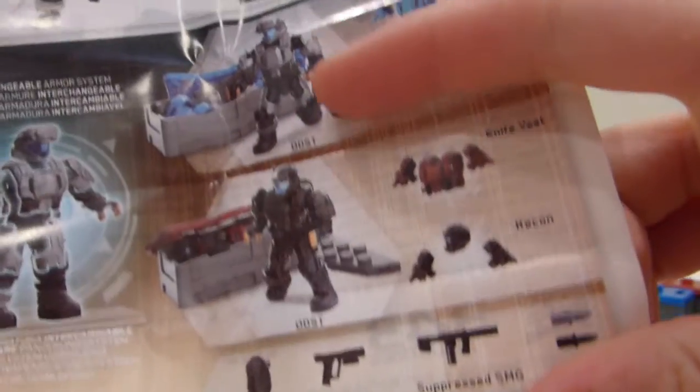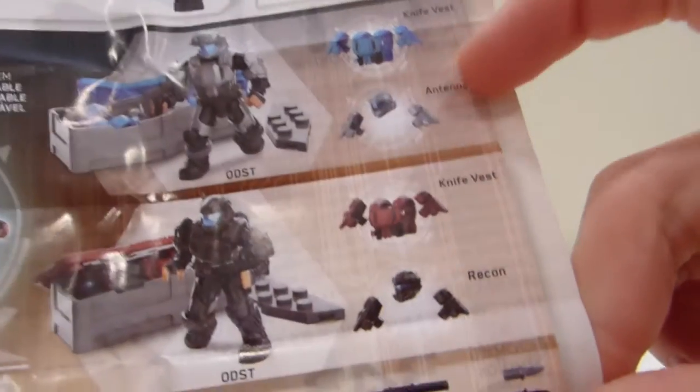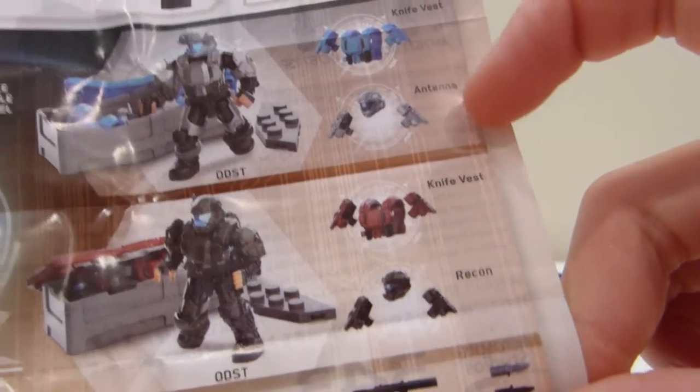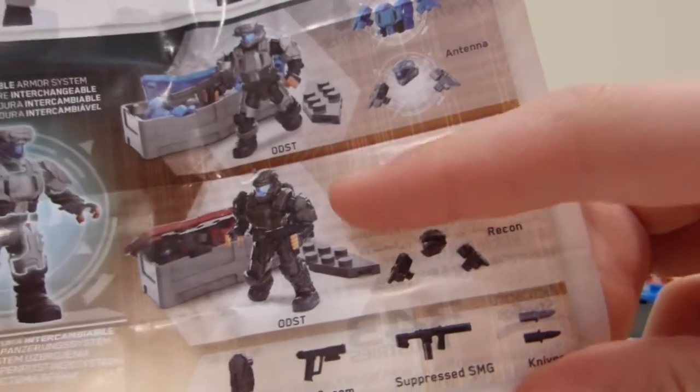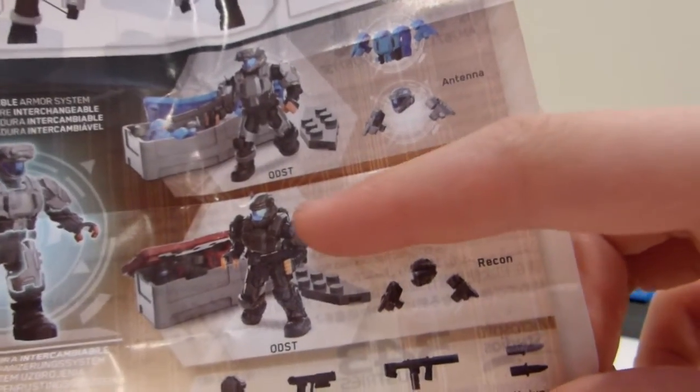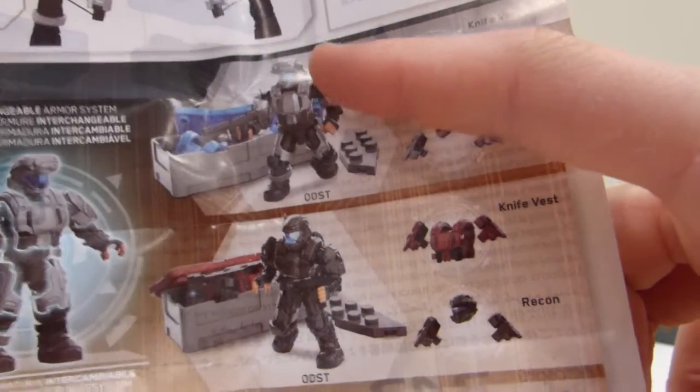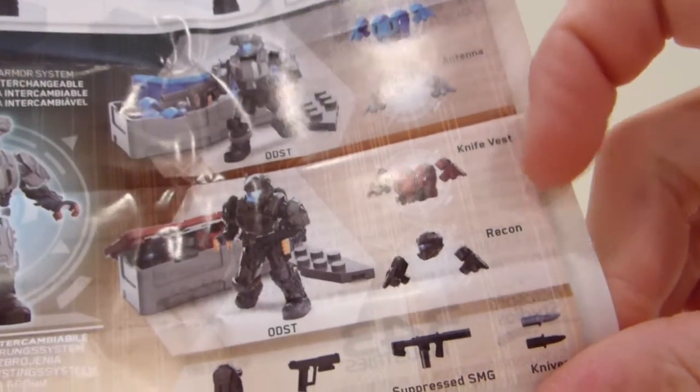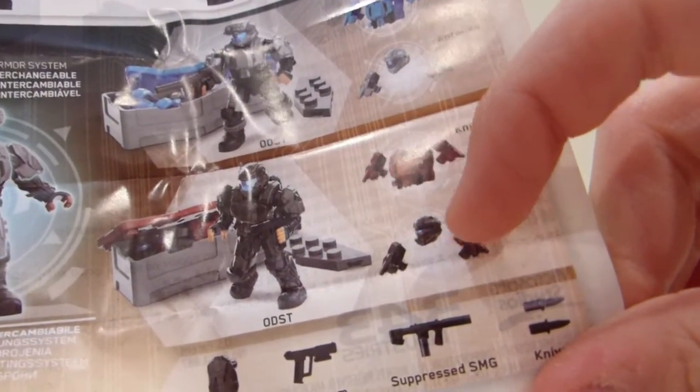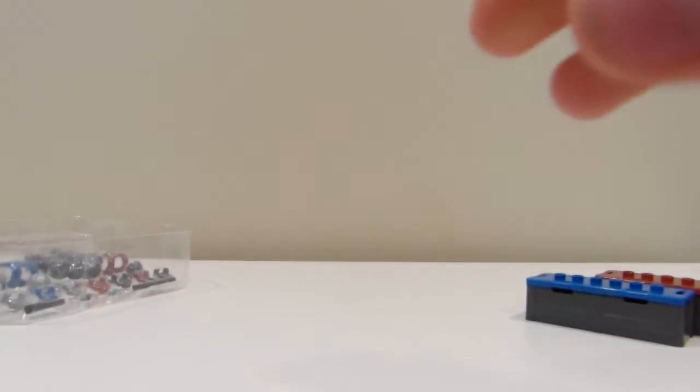It's just going through all the armor that comes with this. It comes with two figures, you can mix and match the armor, and what armor variants are in it. So you have two ODSTs, a knife vest, an antenna helmet, and this guy has a sniper helmet. I've been waiting for this set for a while.